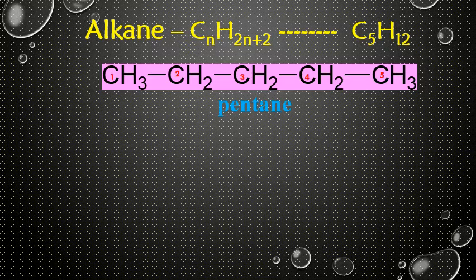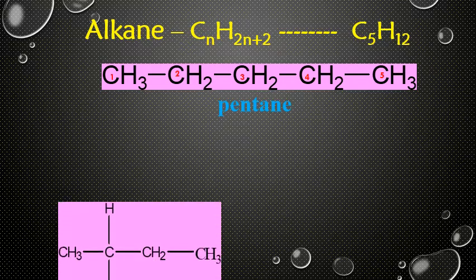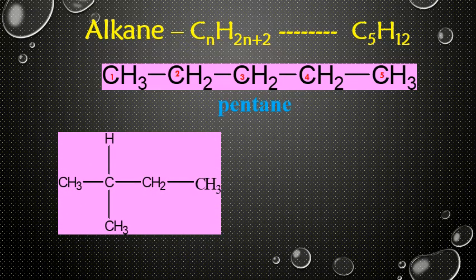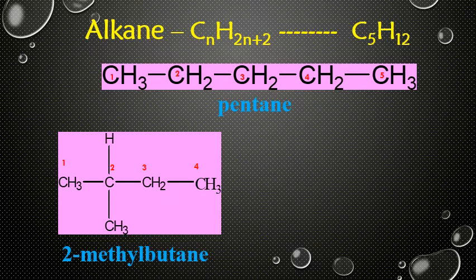We can draw a chain isomer by changing the length of the main carbon chain. If we take a methyl group like this, then the main carbon chain has only 4 carbons. This gives us 2-methylbutane. In this molecule there are only 4 carbons in the main chain, so they are chain isomers.